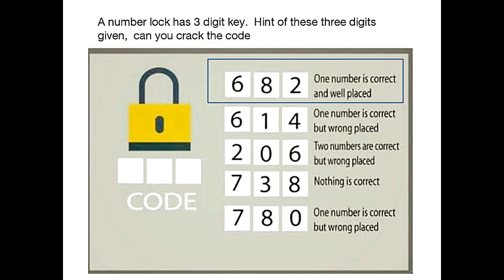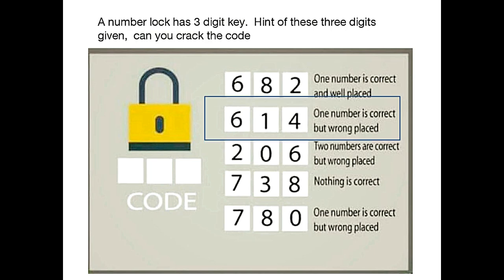First condition says one number is correct and well placed. We cannot do anything here. Let's move to the second condition. Second condition says one number is correct but wrong placed. Let's combine the first and the second conditions together.